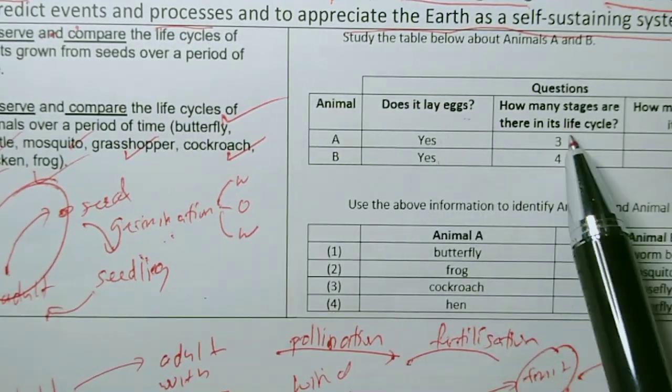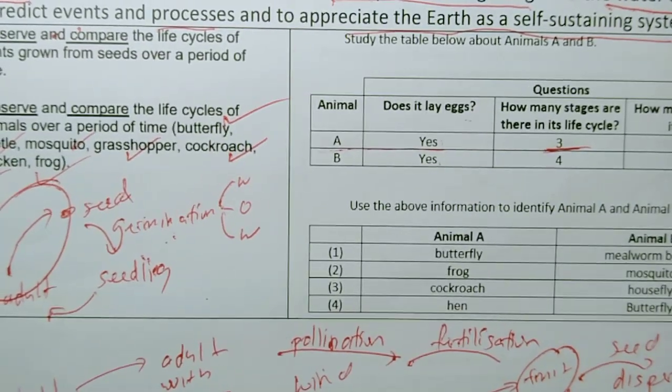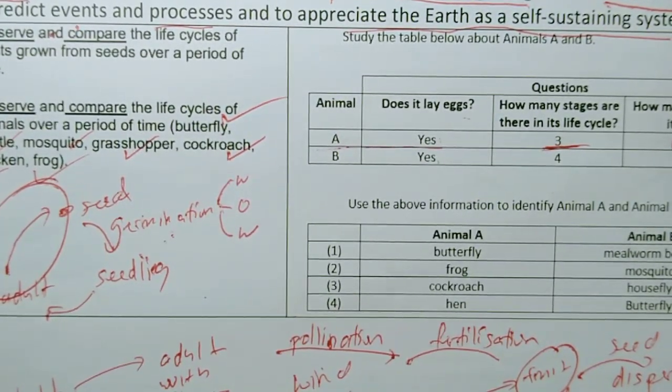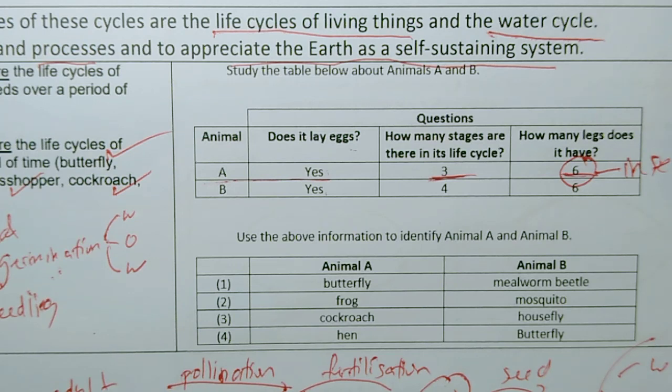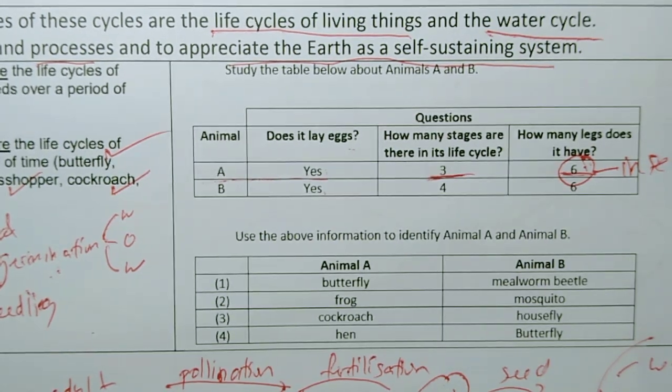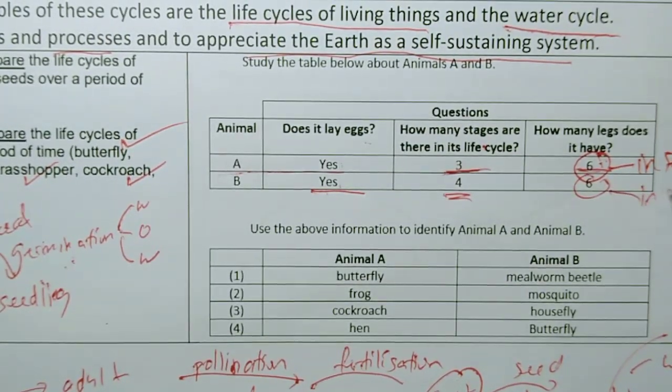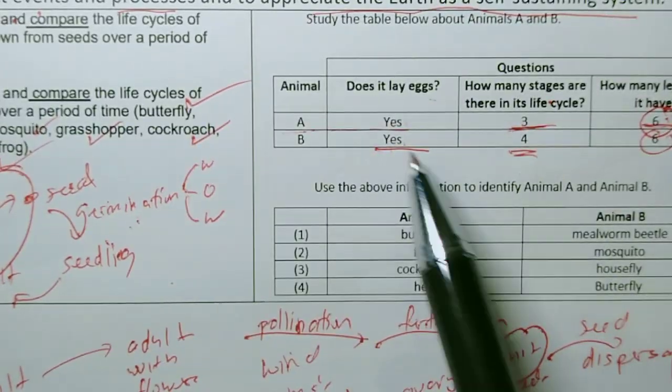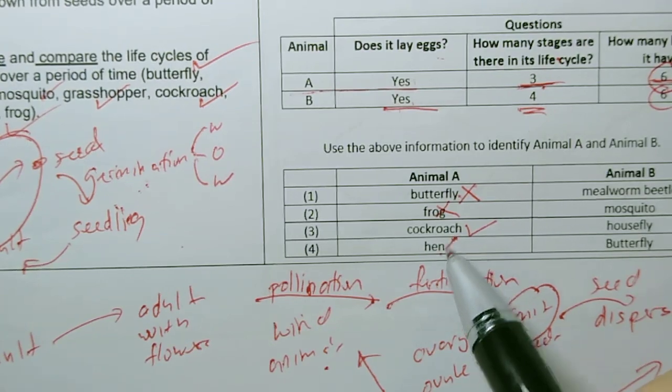Does it lay eggs? Yes. Stages 3, 4 stages. Animal A lays eggs, has 3 stage life cycle, has 6 legs. Oh, very big clue. 6 legs straight away you know it's an insect. So in this question they mix up, they combine 2 things: what you should know about characteristics of living things and life cycle. Does it lay eggs? Yes. Stages 4 stages, 6 legs. So both are insects, but one is an insect with 4 stage life cycle, one is with 3 stage life cycle. Animal A is the one with 3 stage life cycle. Butterfly is 4 stage, frog is not an insect, cockroach is 3 stage, hen is not an insect. Answer is 3.